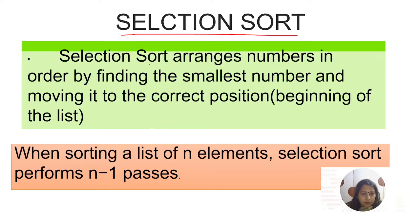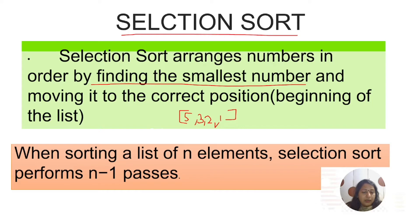What is the meaning of selection sort? It arranges the numbers in order by finding the smallest number. For example, you will have a list — five, three, two, and one. It is going to find out which is the minimum value. You have to create one minimum variable where you are going to store the minimum value at each comparison.